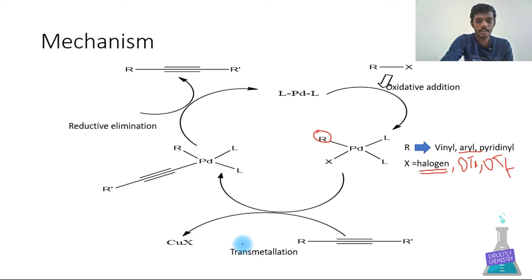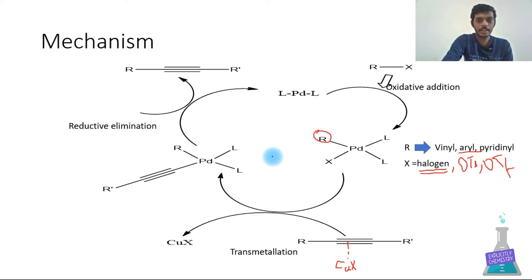The next step is transmetallation. The copper cycle, though not well described, involves the terminal alkyne reacting with copper halide, forming a bond at Cu and producing a pi-alkynyl complex. After transmetallation, a palladium intermediate is formed in which the terminal alkyne is attached. Following this, reductive elimination occurs, forming the product and regenerating the palladium catalyst.